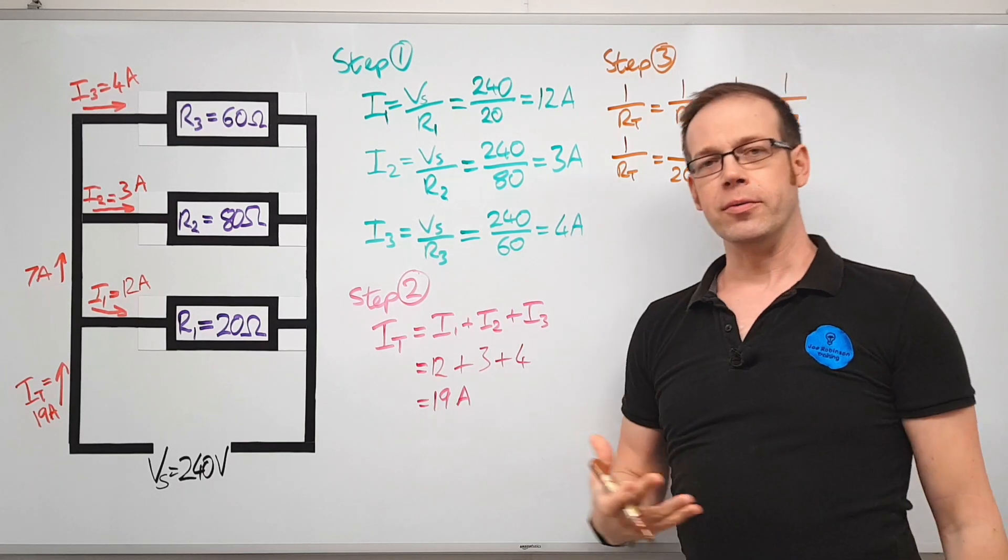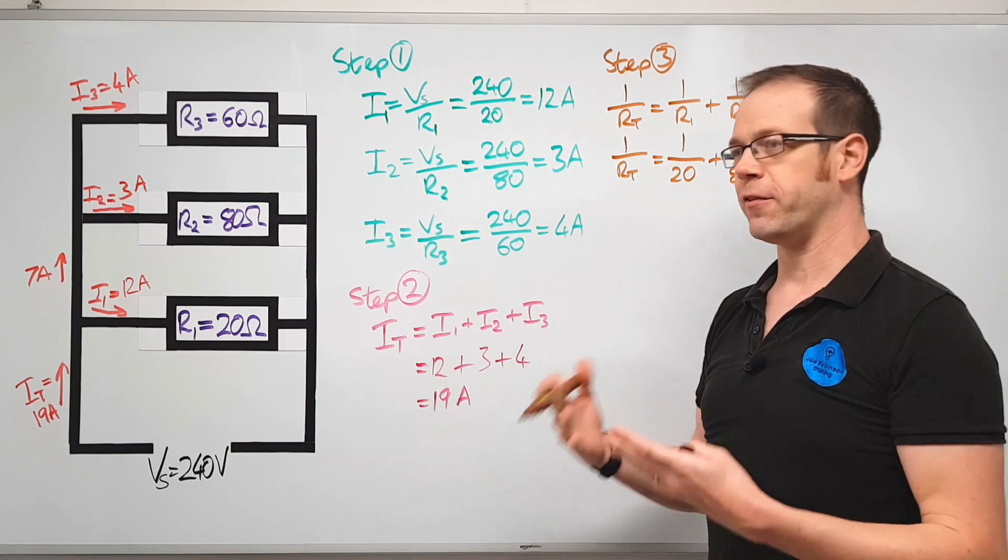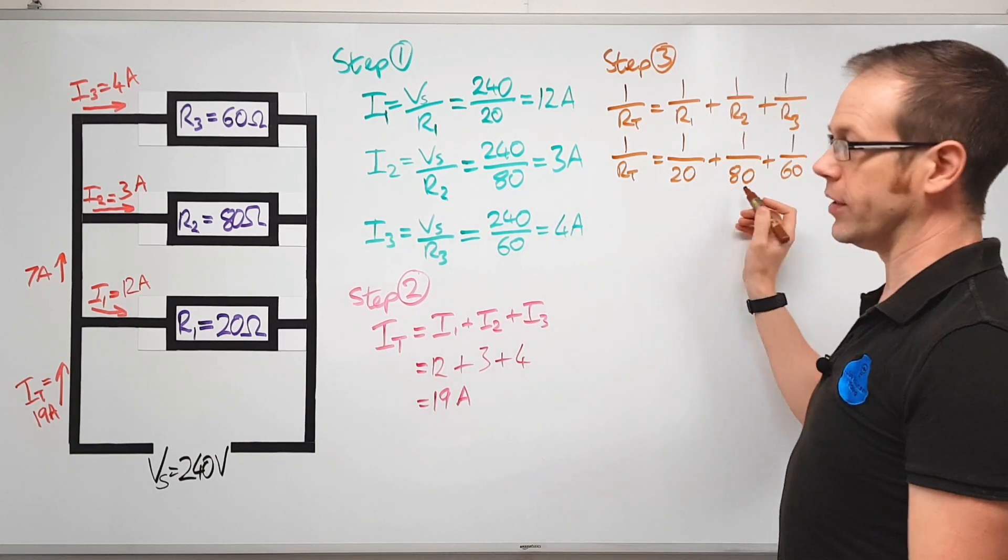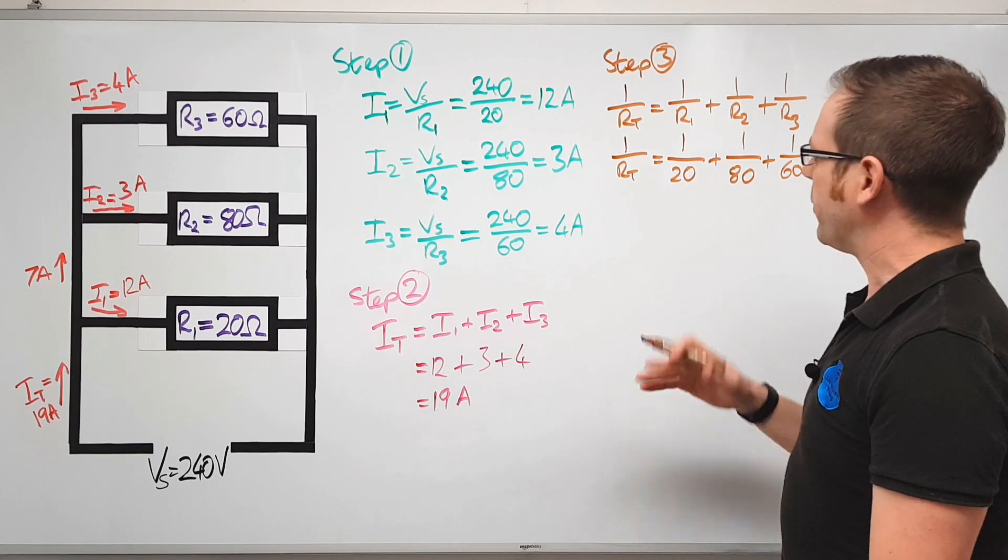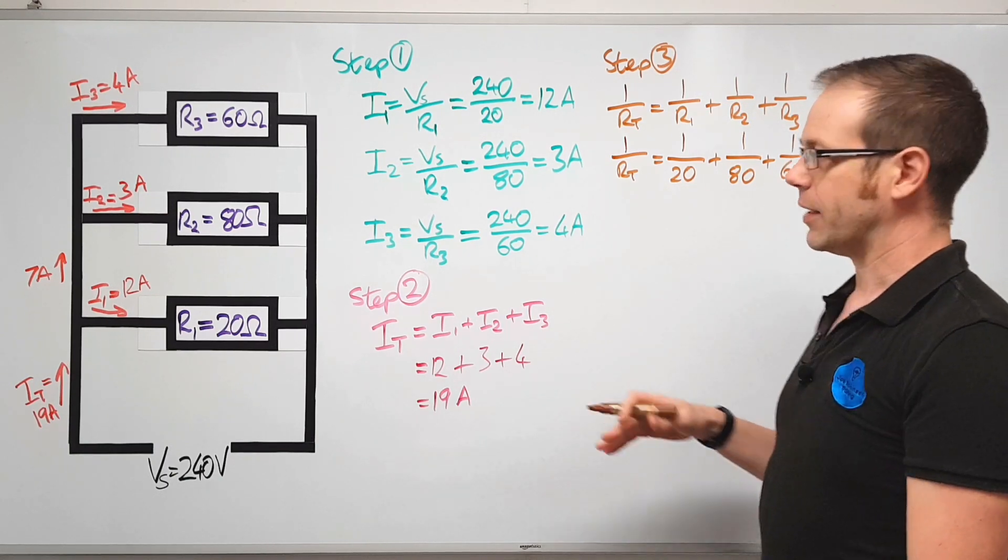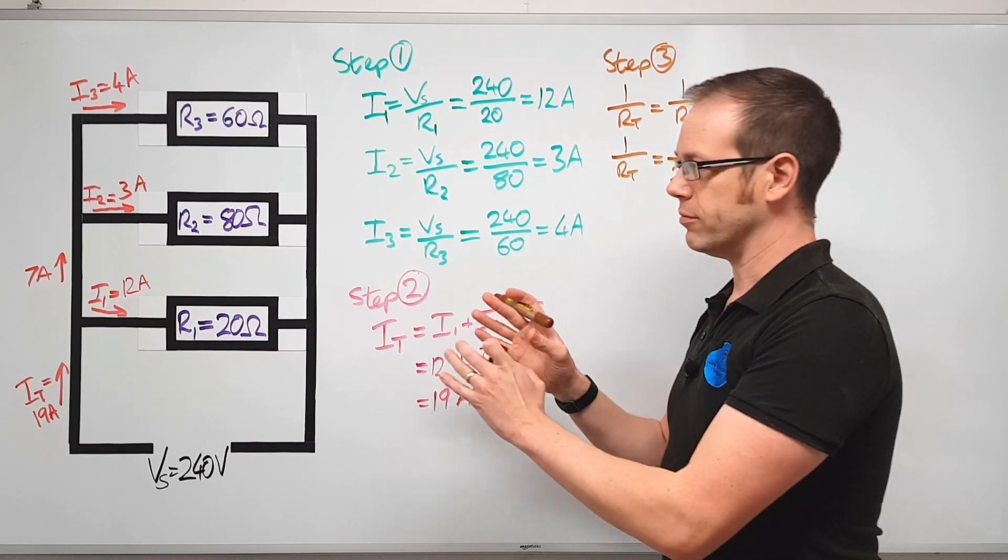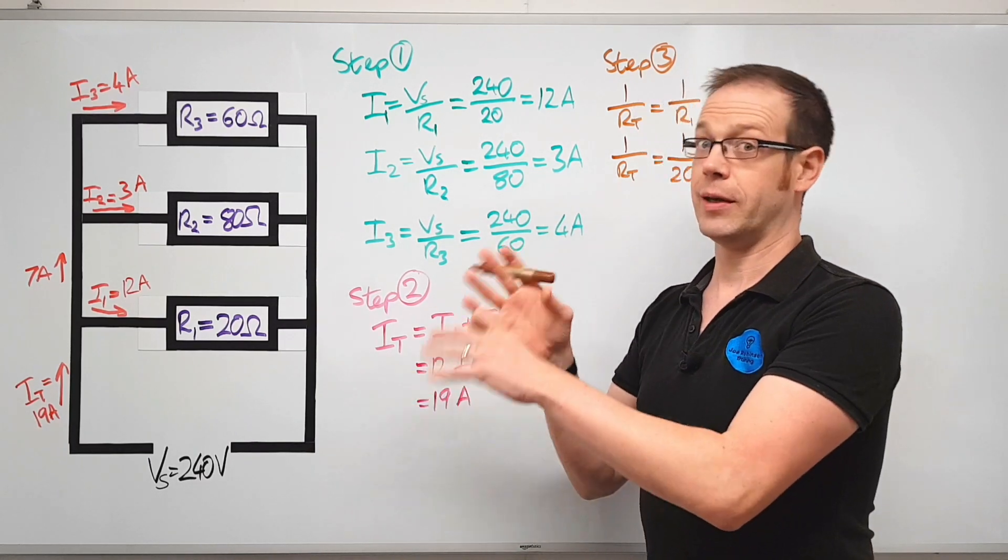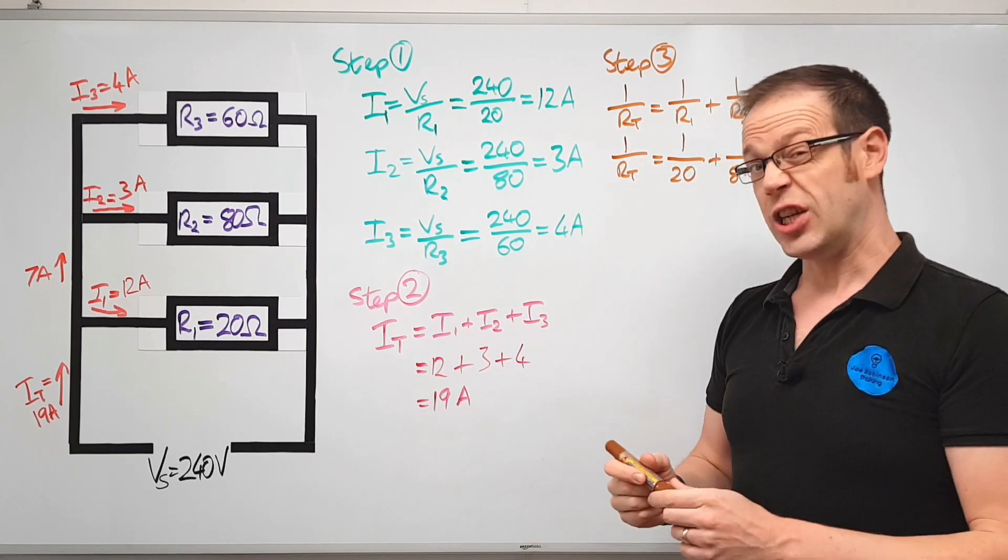Now at this stage a really cruel kind of tutor would start to make you add these fractions together in the proper way by finding the lowest common denominator and doing all that stuff, which probably wouldn't be too difficult in this case but might get a little bit more confusing. What we're really interested in here is trying to figure out what the total resistance is quickly so we can find the total current and confirm that we get the same answer. So we're going to cheat a little bit.